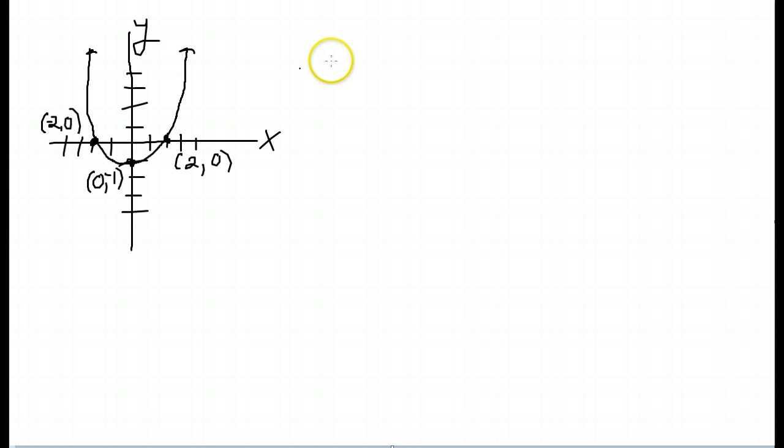What we do is we test each of our points. Now, with respect to the x-axis, what we need to do is we need to change the y-coordinate of each. If, when I change the y-coordinate of each, it is on that graph, then it is symmetric with respect to the x-axis.